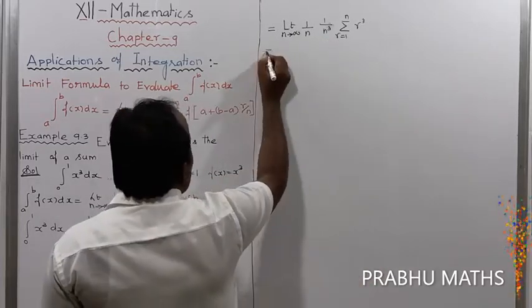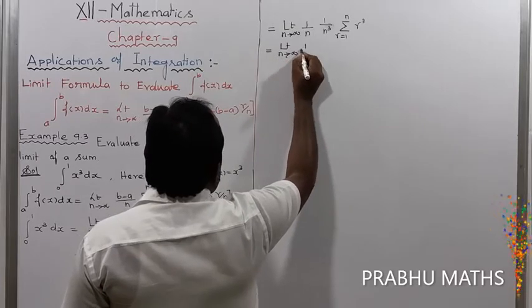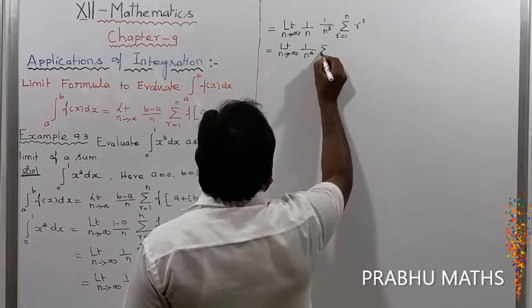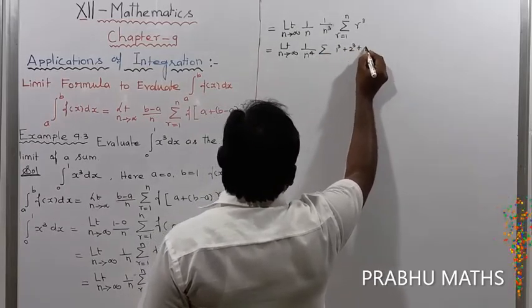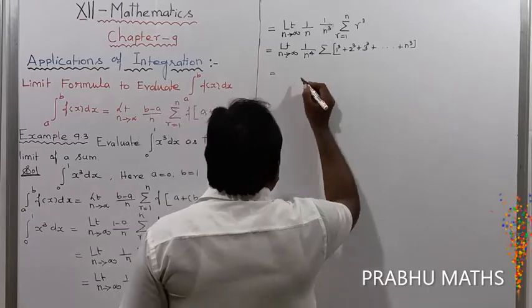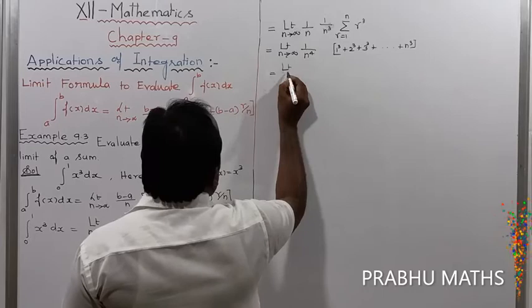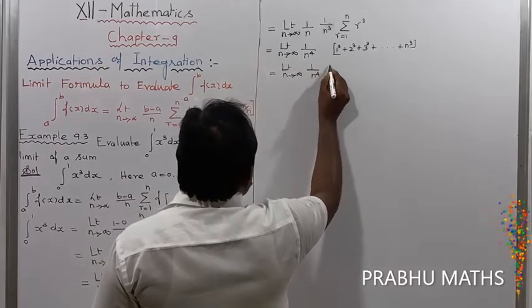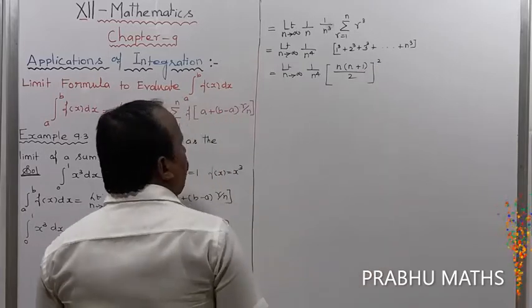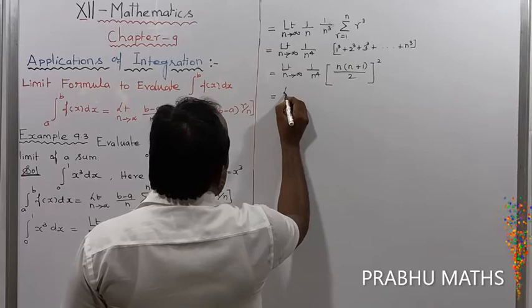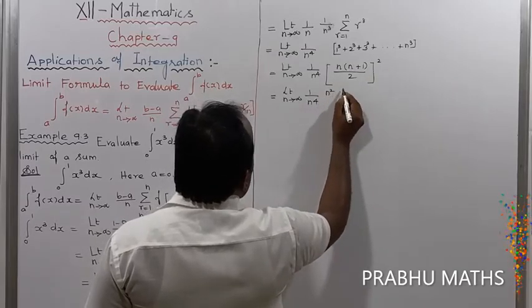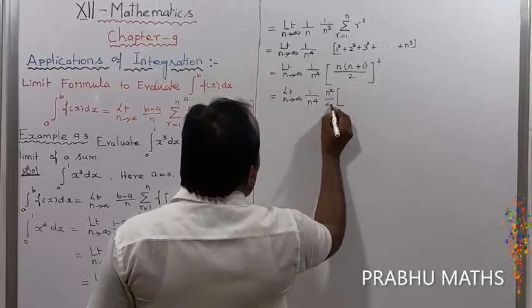Applying the formula for the sum of cubes — 1³ + 2³ + 3³ + ... + n³ = [n(n+1)/2]² — the expression becomes: limit as n tends to infinity of 1 by n⁴ times [n(n+1)/2]². Expanding: 1 by n⁴ times n² times (n+1)² divided by 4.